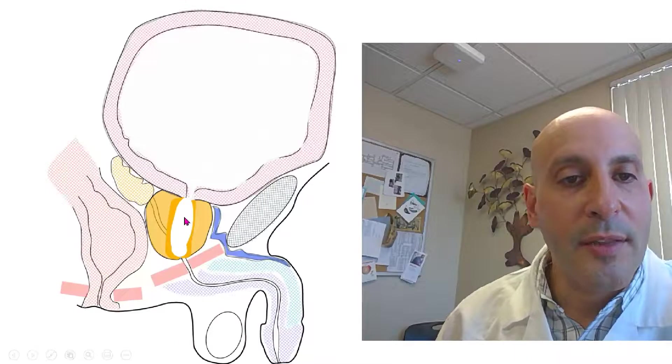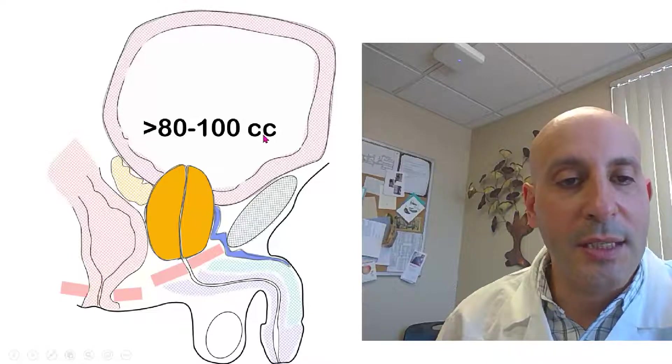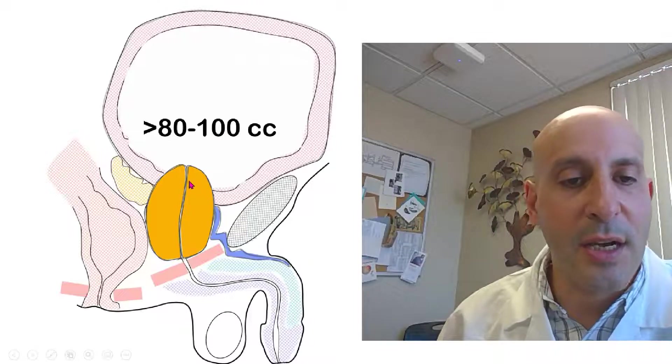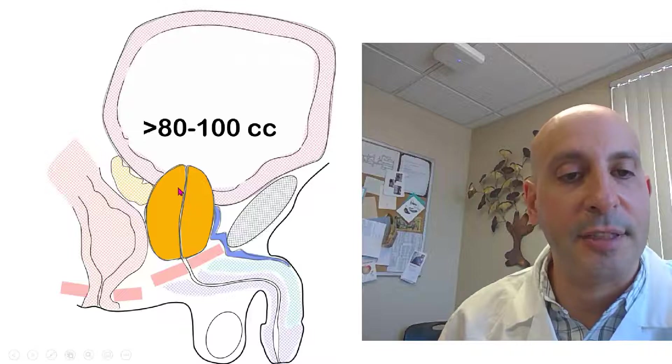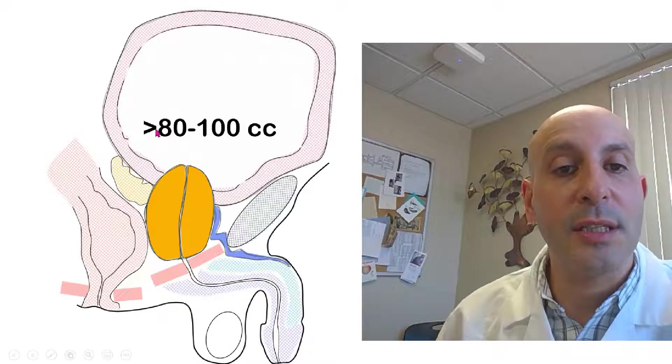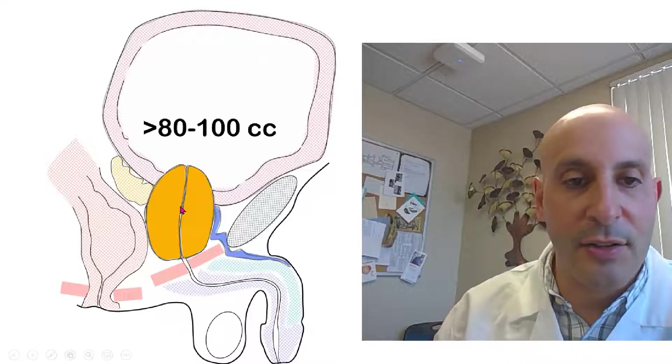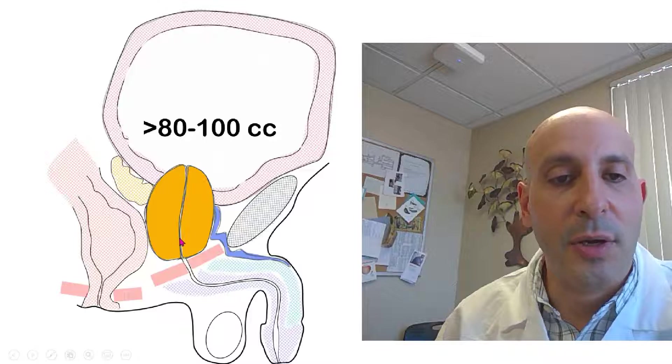But the problem comes where the prostate is very enlarged, more than 80 to 100 cubic centimeters. We can figure that out by taking some measurements on imaging, either an ultrasound or a CAT scan or MRI. When the prostate gets really large like this, those procedures that are designed to carve out a channel are much more difficult to do and tend not to work so well.